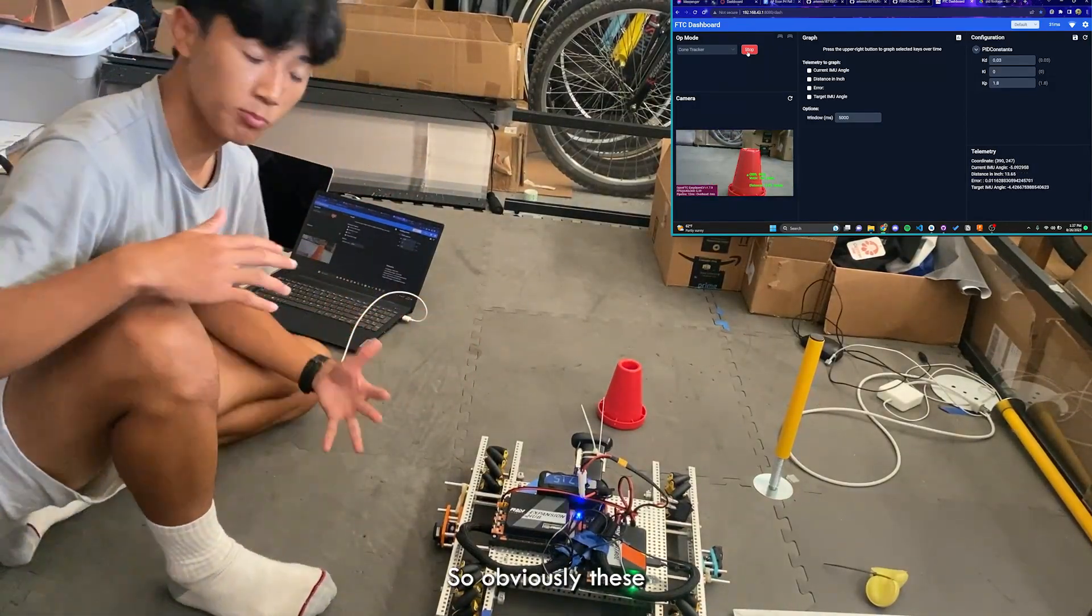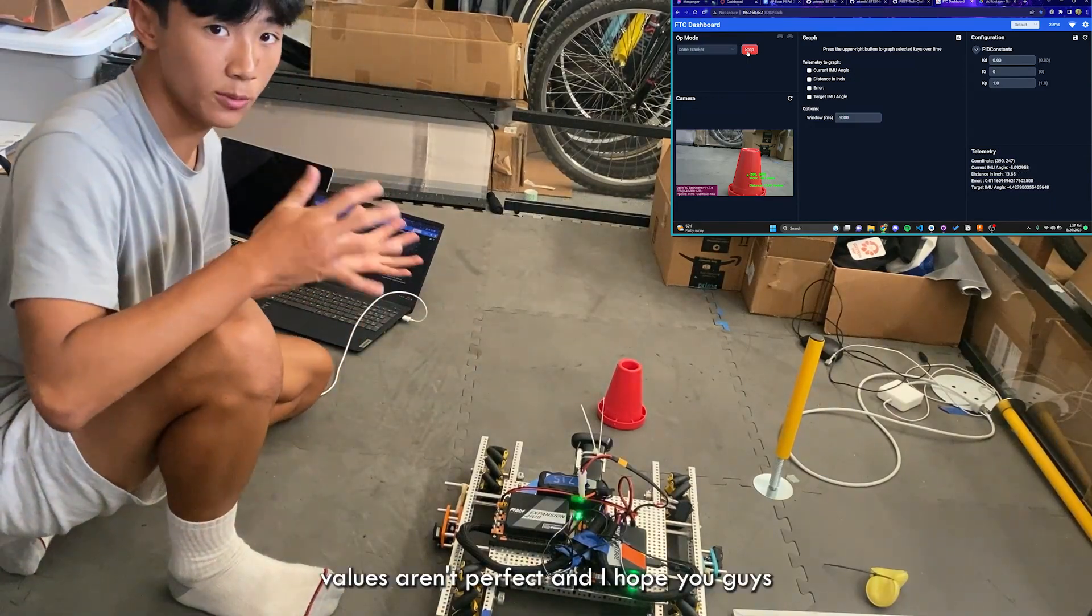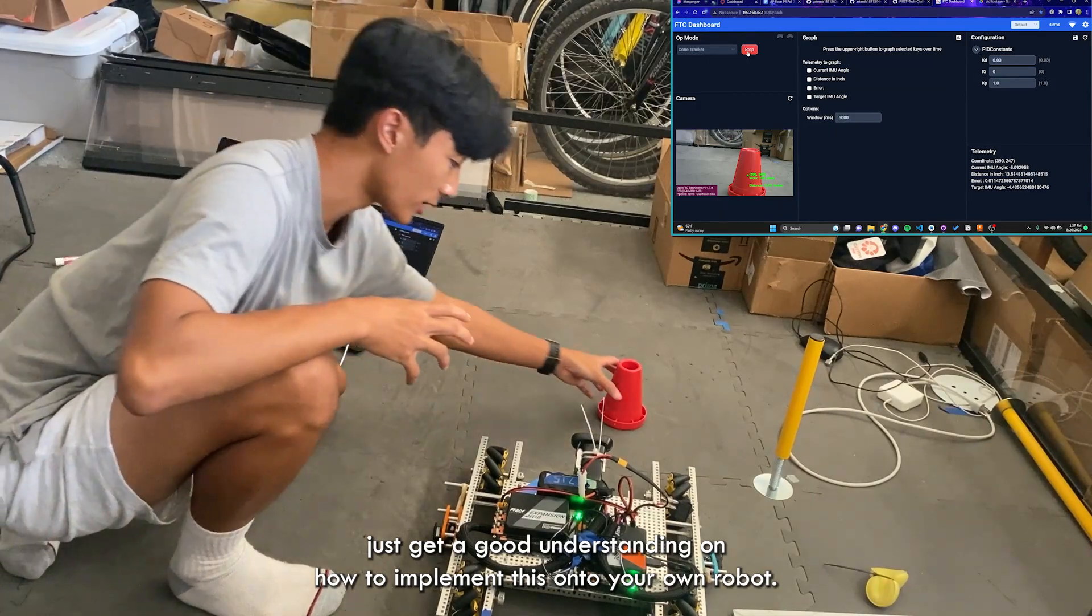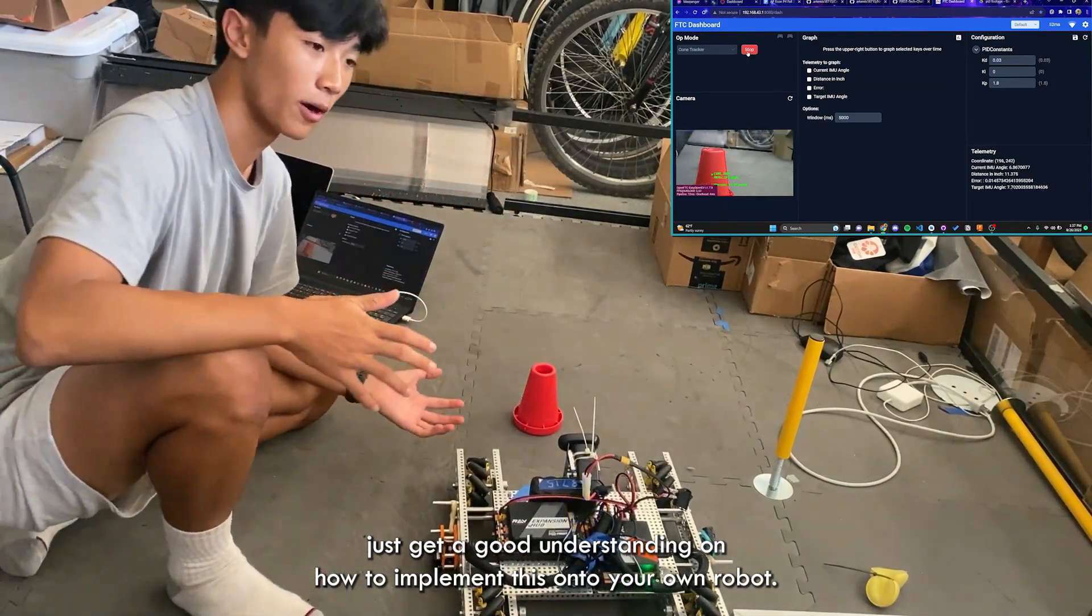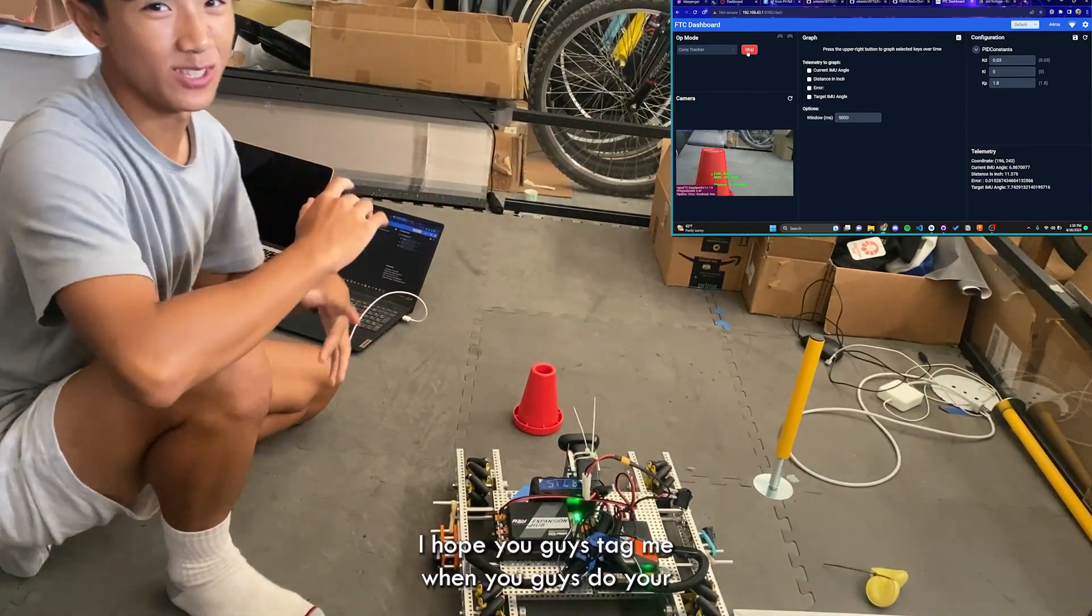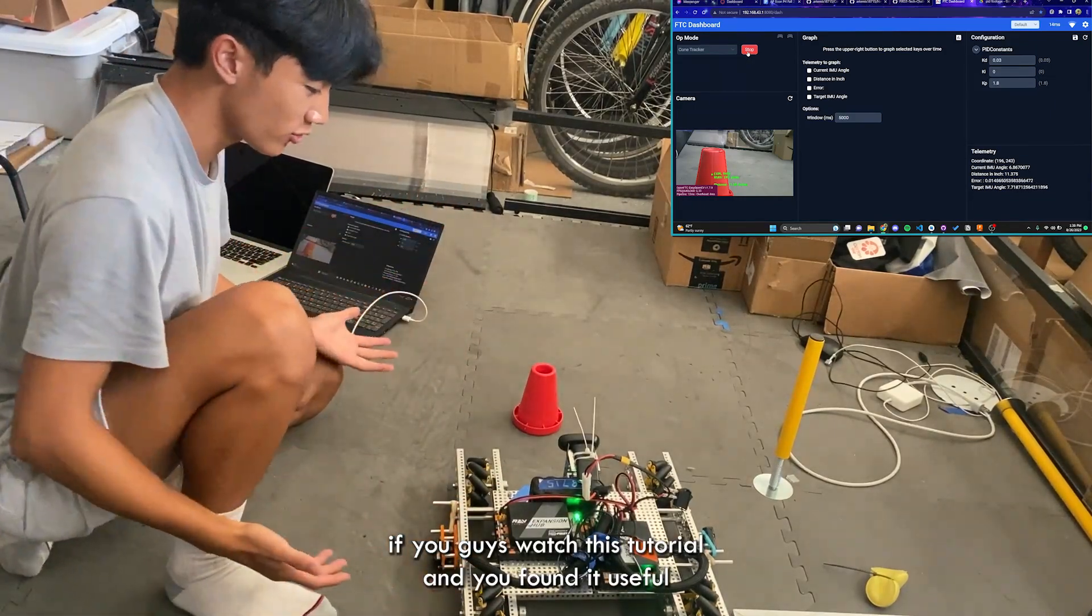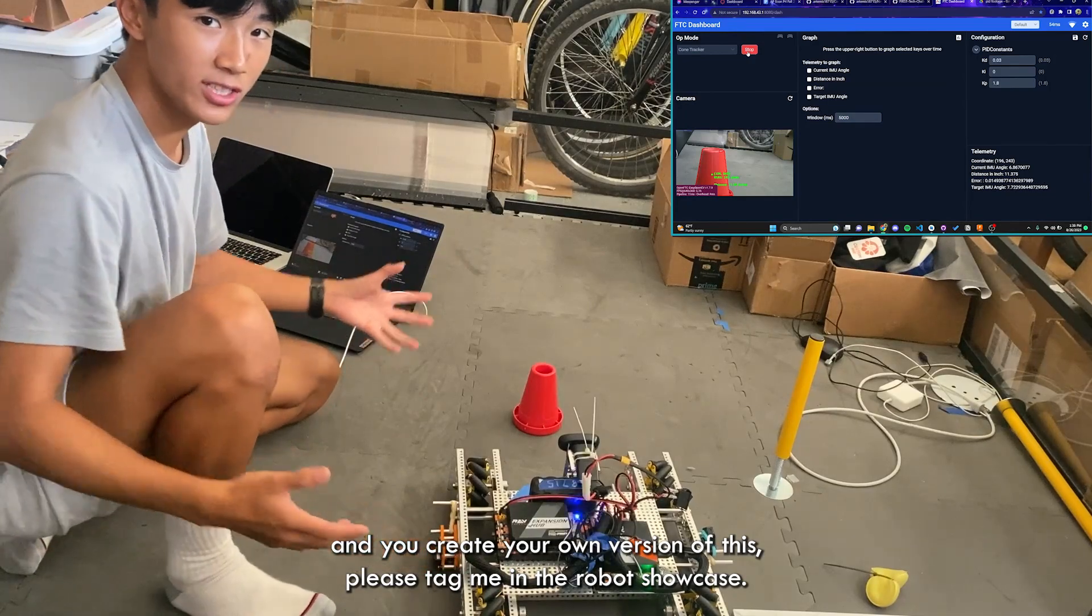So obviously these values aren't perfect and I hope you guys just get a good understanding on how to implement this onto your own robot. I hope you guys tag me when you do yours. If you guys watch this tutorial and you found it useful and you create your own version of this, please tag me in the robot showcase.